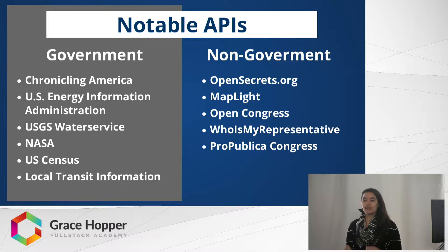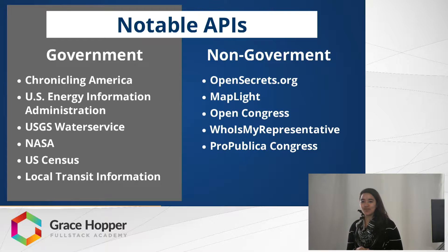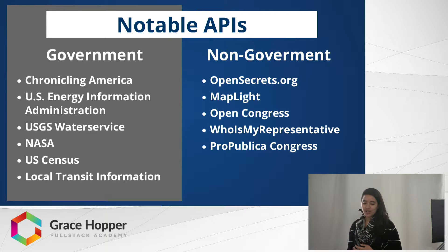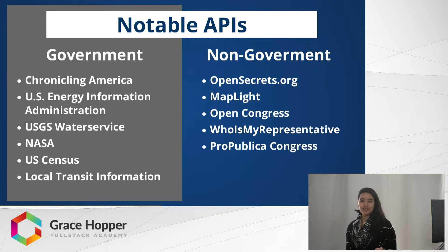So what are some notable APIs on both sides? I have a small selection here of both. I think one of the most interesting government source APIs would be NASA — everything from a picture of the day, which is HD and beautiful of the Earth and space, to a list of asteroids ordered by when they will soonest pass Earth. I don't know what you would do with that, but it sounds really cool. From the non-government side, MapLite is a particularly interesting one — they try to correlate donations made to legislators and their voting, which could be a very interesting data set to go over.